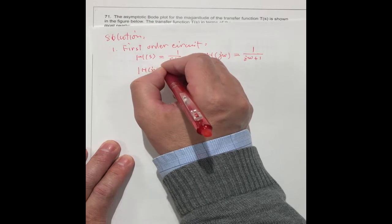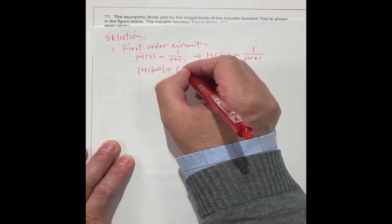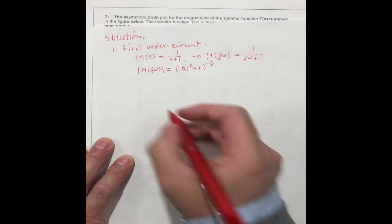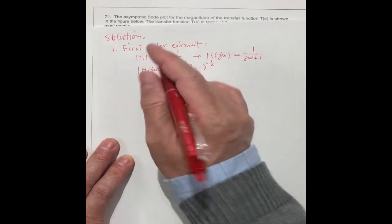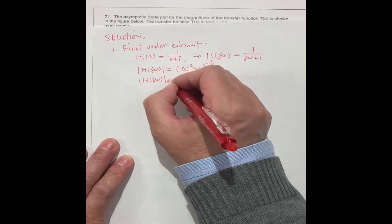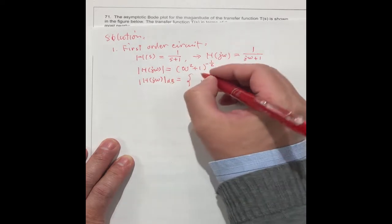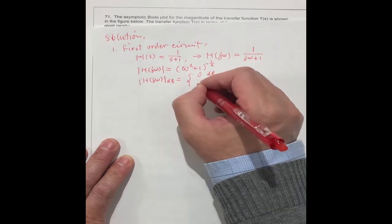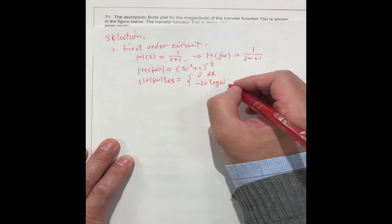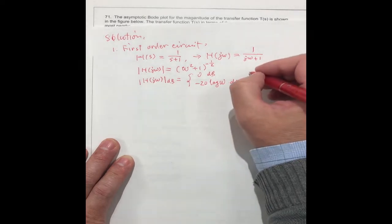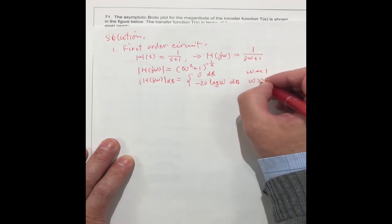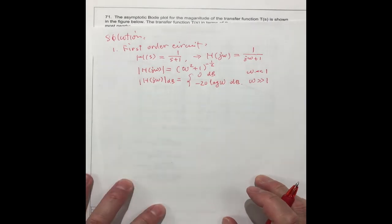The magnitude of the transfer function should be this one. H(jω) equal to (jω² plus 1)^(-1/2). Or if you log both sides, H(jω) in dB is equal to 0 dB or minus 20 log ω dB. This is for ω greater than 1.